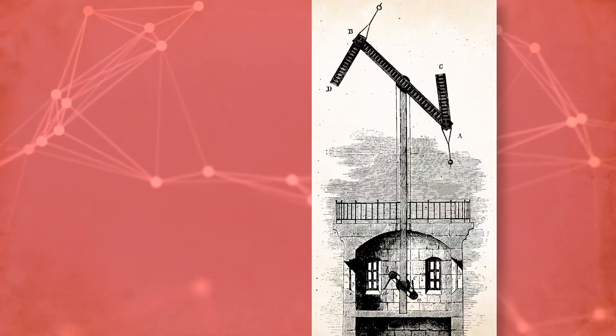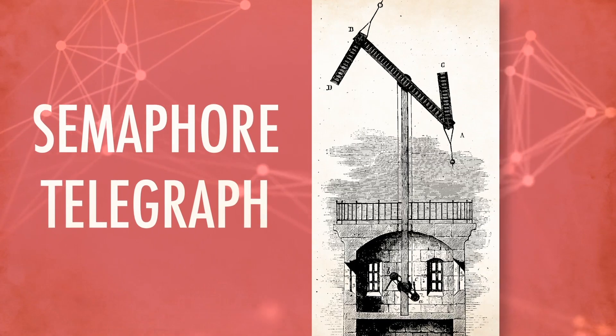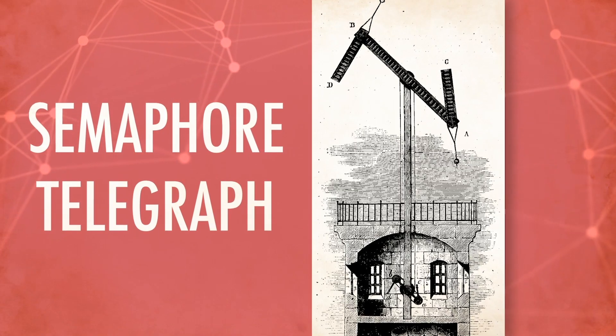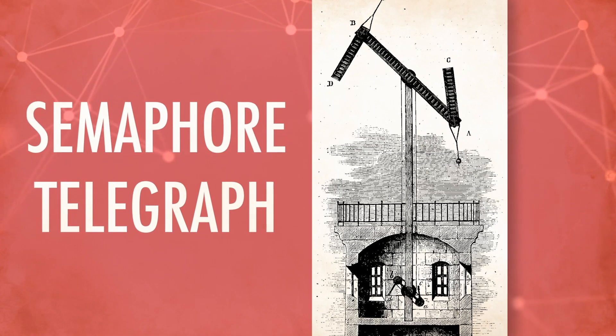Claude Schaap called his design a semaphore telegraph. Unlike the electric telegraph that would follow it, Schaap's semaphore telegraph relied on two adjustable vertical rods connected by a horizontal beam.